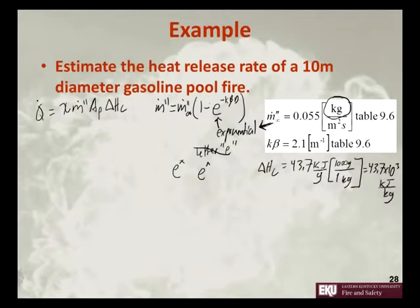As this lecture is getting a little long, I'm going to move on. So m dot double prime, in this case, is going to be equal to 0.055 kilograms per meter squared second times 1 minus the exponential of negative 2.1 times 10.